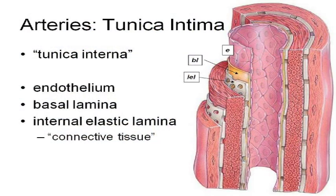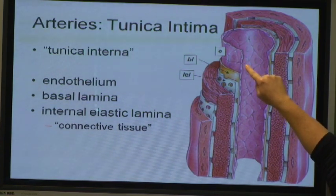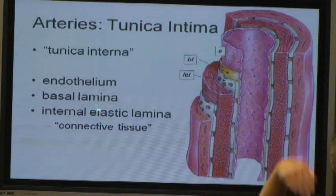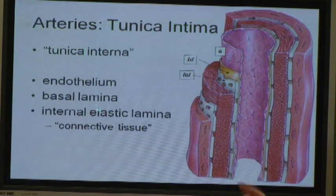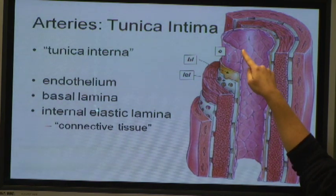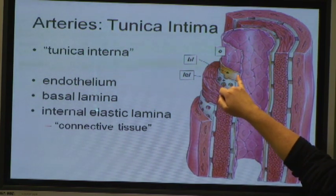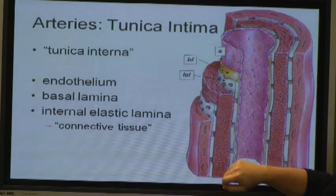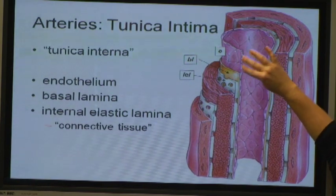The tunica intima has three little parts to it. You have the endothelium — that's just simple squamous epithelial tissue. Remember that the endothelium is continuous with the endocardium; the lining of the chambers of the heart is continuous with the inner lining of the vessels. Then you've got a little bit of connective tissue and some elastic tissue. So your tunica intima is basically connective tissue and simple squamous epithelial tissue.